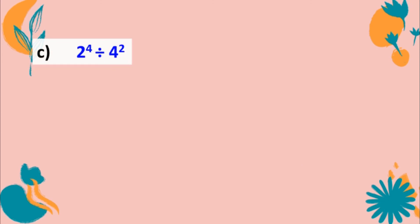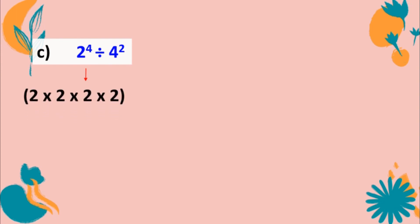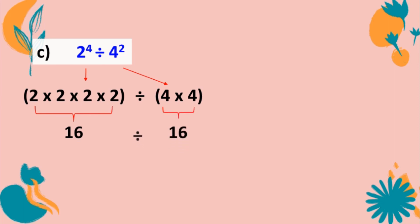Letter C: 2 to the fourth power divided by 4 squared. The expanded form of 2 to the fourth power is 2×2×2×2, and 4 squared is 4×4. Simplifying: 2×2 is 4, times 2 is 8, times 2 is 16. And 4×4 is 16. Then 16 divided by 16 equals 1.